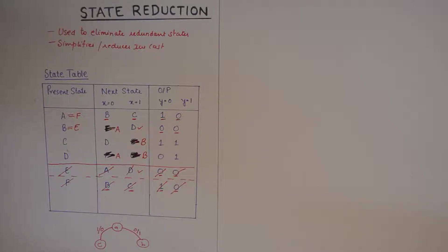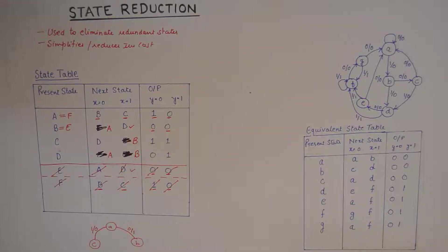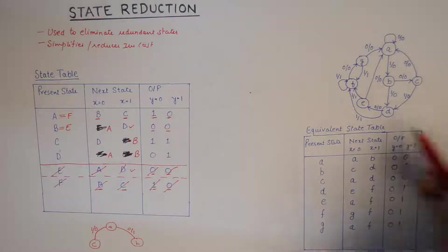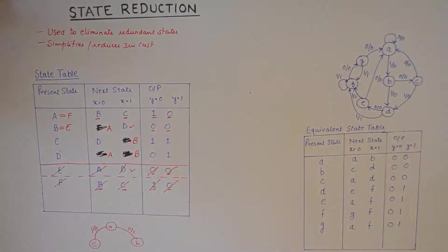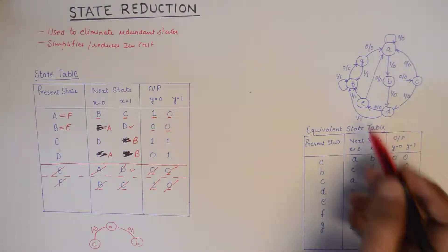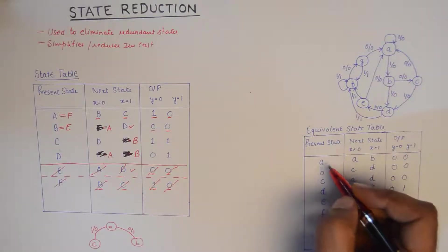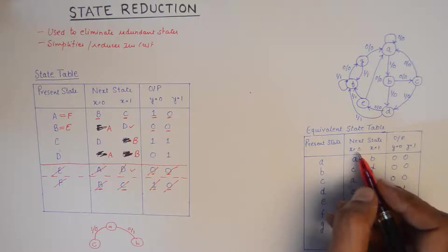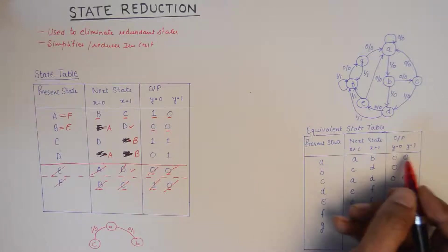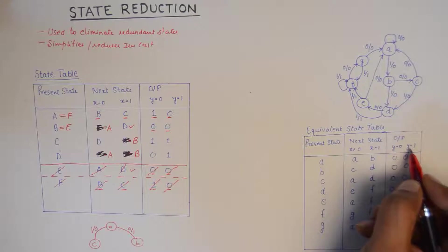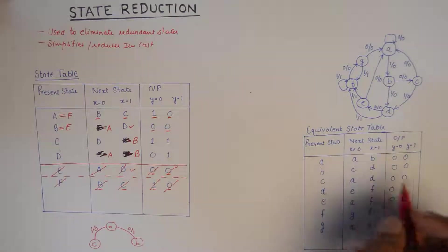This was one example of a simple reduction. I have one more example where a state transition diagram is given. From that diagram we will draw the state table and from the state table we will reduce the states. On the right-hand side of the sheet, I have a state transition table with seven states ranging from A, B, C, D, E, F, and G. To fill the table, you simply track the state transitions and outputs — for example, following the arrows to see where each state goes on input 0 or 1, and what output is produced.